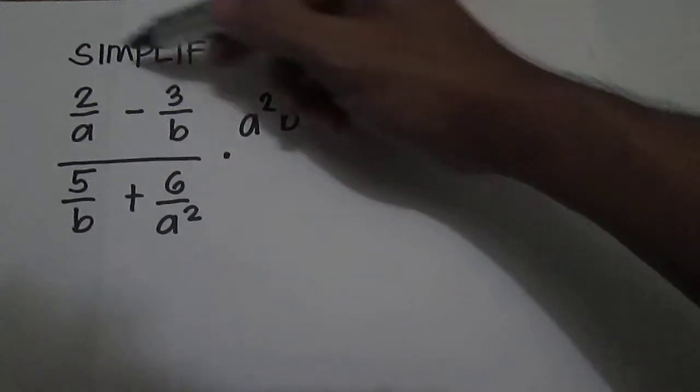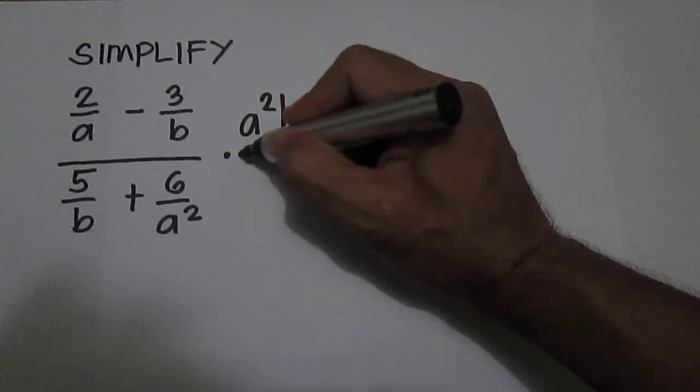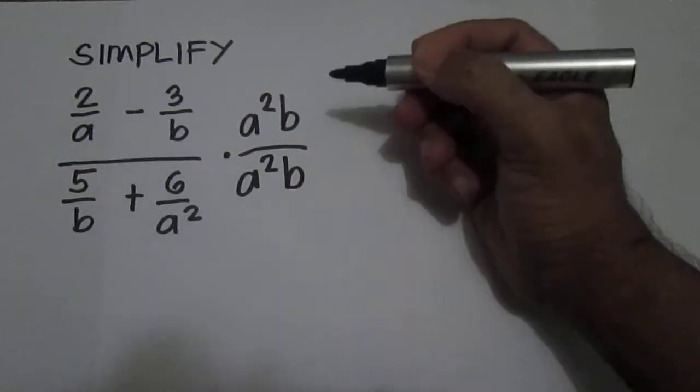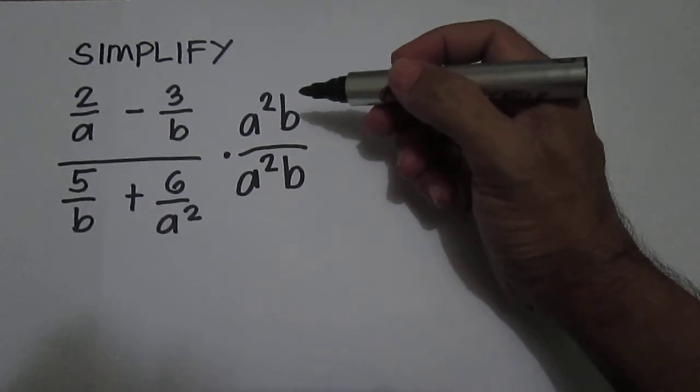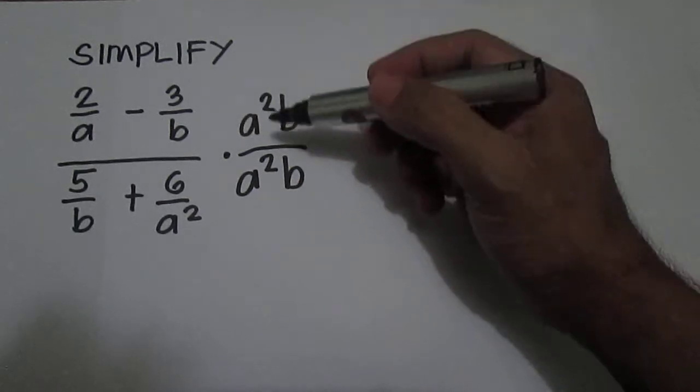Multiply the numerator by a squared b, as well as the denominator. We are actually multiplying the complex rational expression by 1.